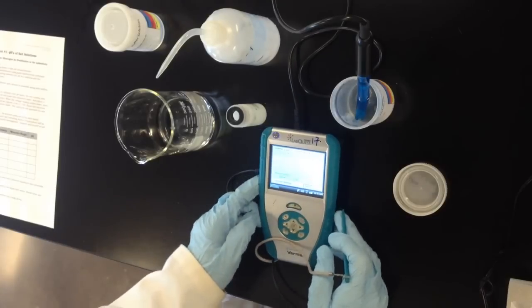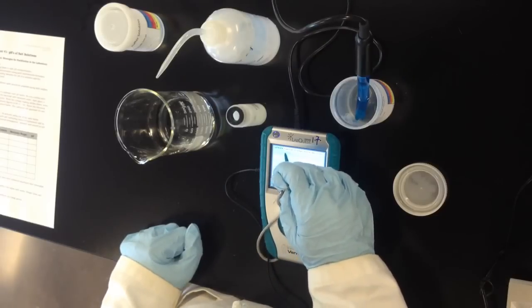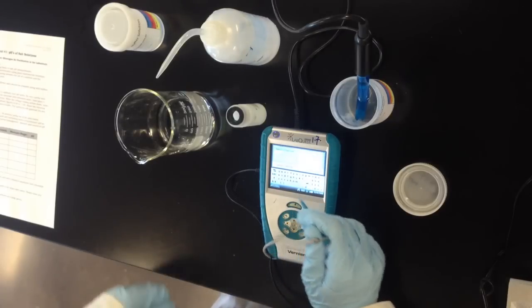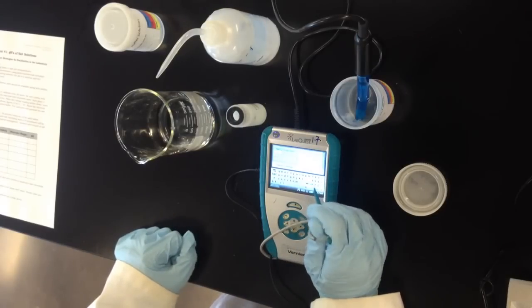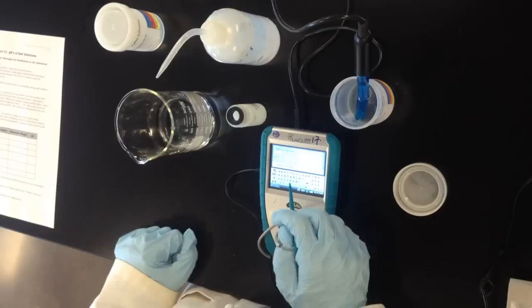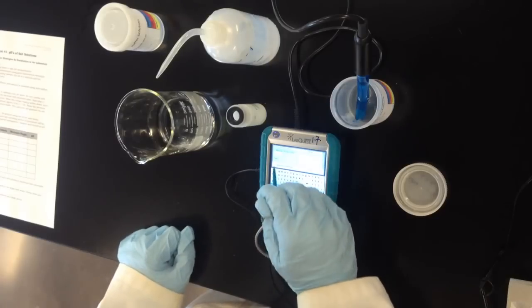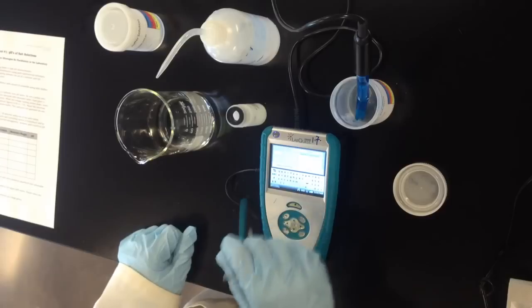This will bring me to a screen on the LabQuest where I can enter the known or the true values. The beauty of this approach is that we know the pH of the buffer. It maintains a pH of 4.00. So after giving some time for that electrode to settle, we can type 4.00 here for the true value and then you may need to scroll down using the scroll bar on the right hand side but there's a button below that text field that says keep.